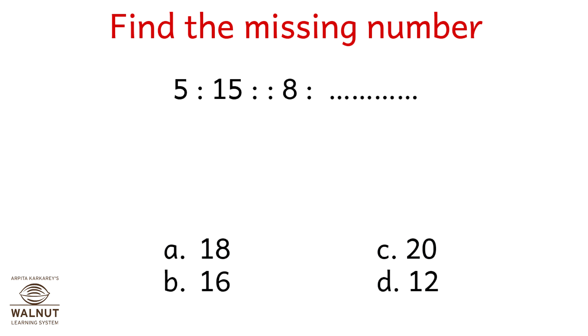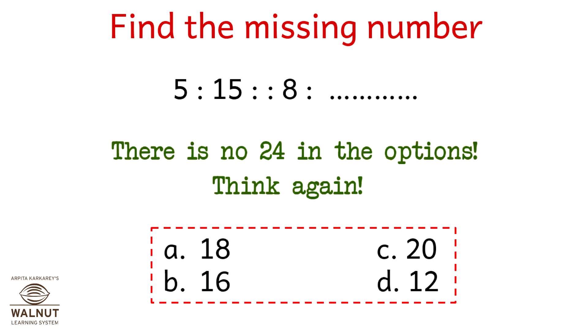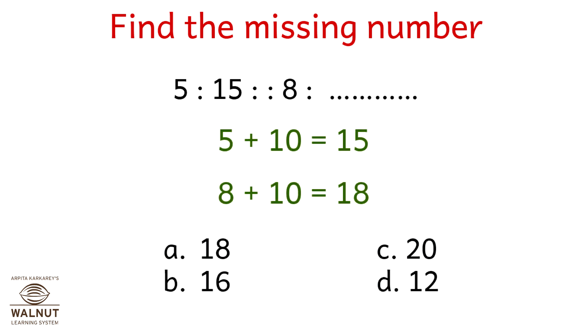5 is to 15 as 8 is to what? 5 into 3 is 15, and 8 into 3 is 24, so 24 has to be the answer, right? No, there is no 24 in the options. Think again. 5 plus 10 is 15, so 8 plus 10 is 18. Do we have an answer? Yes, option a.